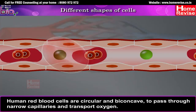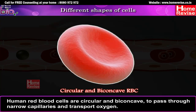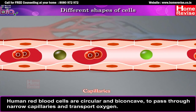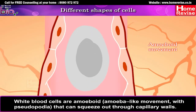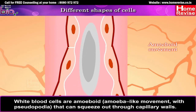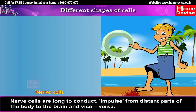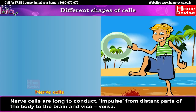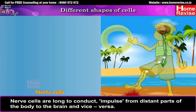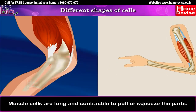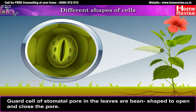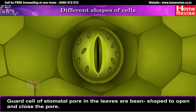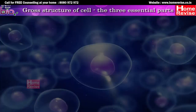Human red blood cells are circular and biconcave to pass through narrow capillaries and transport oxygen. White blood cells are amoeboid — that is, amoeba-like — with pseudopodia that can squeeze through capillary walls. Nerve cells are long to conduct impulses from distant parts of the body to the brain and vice versa. Muscle cells are long and contractile to pull or squeeze parts. Guard cells of the stomatal pore in leaves are bean-shaped to open and close the pore.